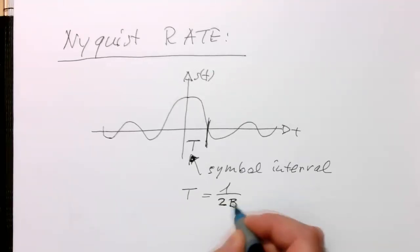If our bandwidth of our baseband is set in this way, then we won't get any inter-symbol interference.